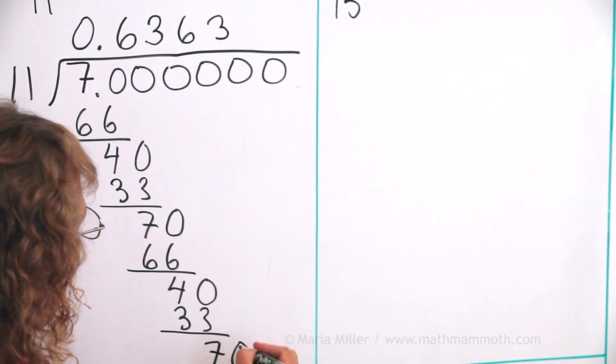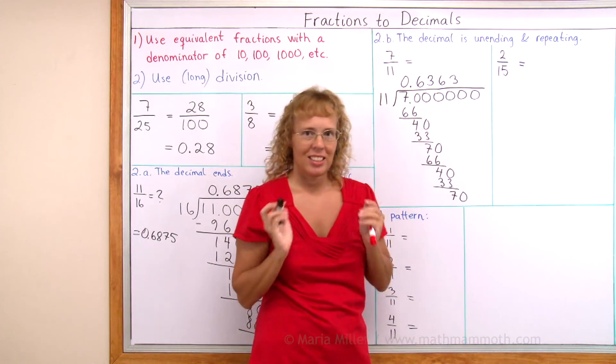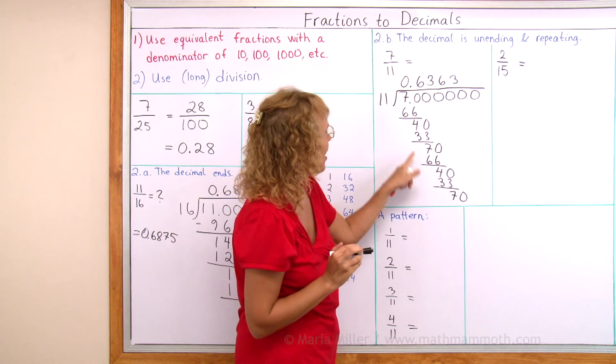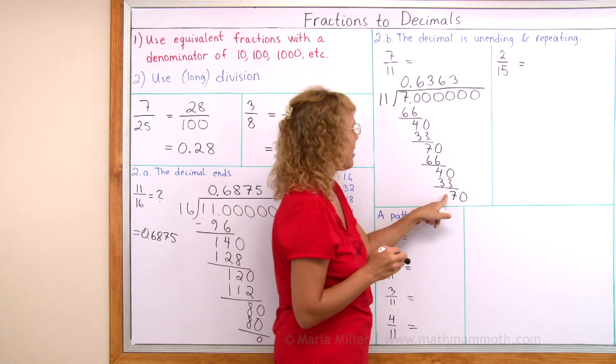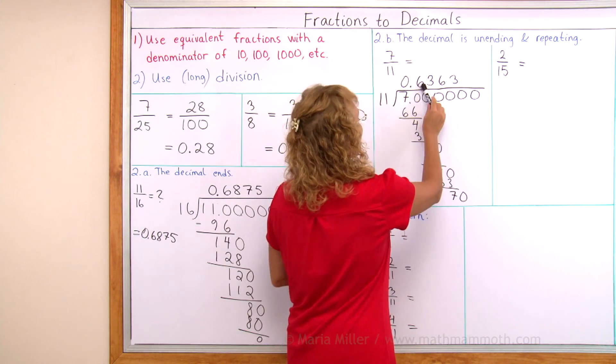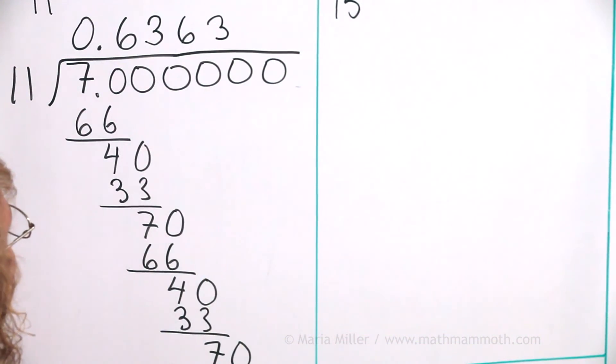Now you notice that it starts repeating here. I get 40, 33, 70, 66. Those same numbers. 40, 33, 70, 66. And these are repeating here too: 6, 3, 6, 3.